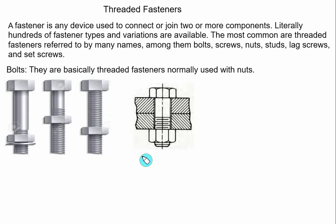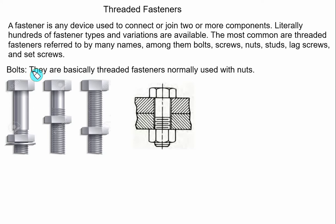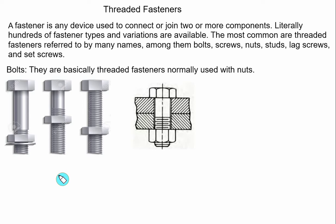There are many fasteners available, and the most common are the threaded fasteners, referred to by names. Among them are bolts, screws, nuts, studs, and the set screw. There is hardly a difference between the bolt and the screw. If we use an assembly having a bolt and nut, it will be called a bolt. If only the head and the threaded portion are used — that is, the nut is removed — then it will be called a screw.